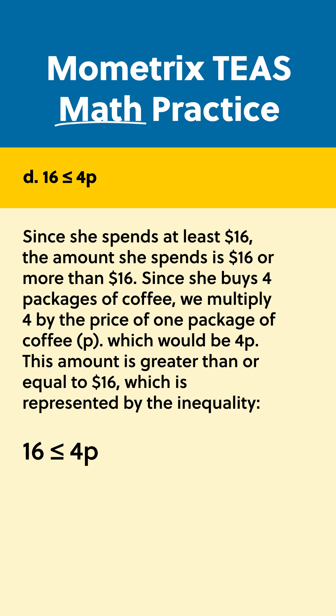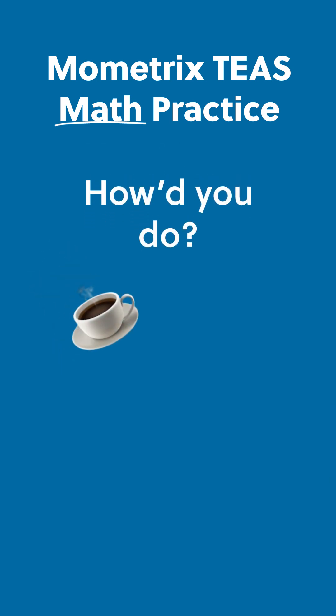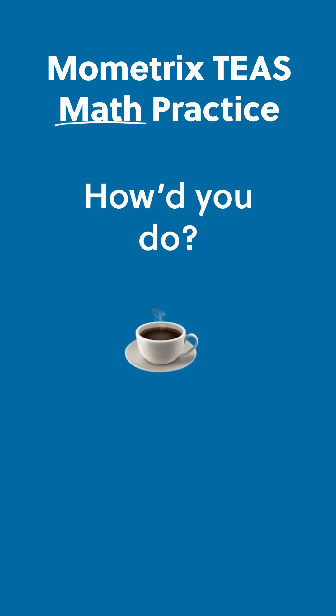This amount, 4P, is greater than or equal to $16, which is represented by the inequality: 16 is less than or equal to 4P. Did you get it right? Drop your coffee order in the comments and I'll rate it.